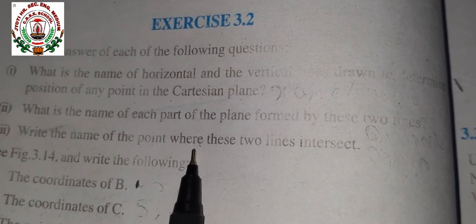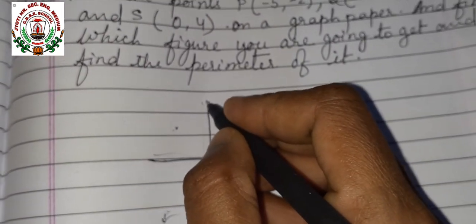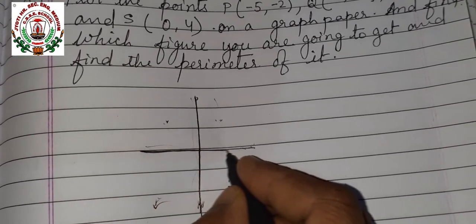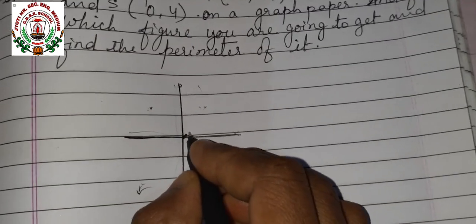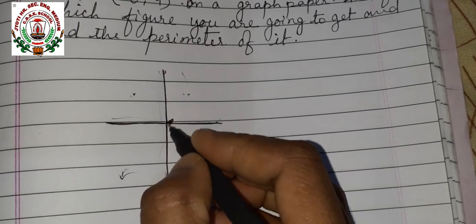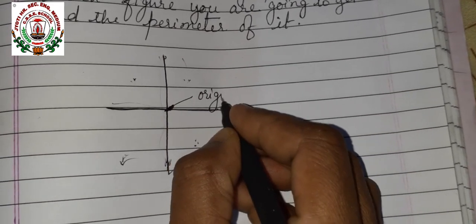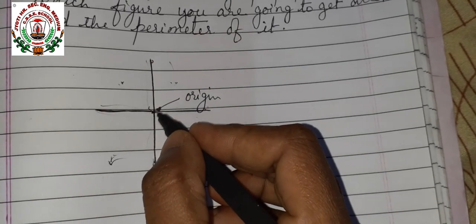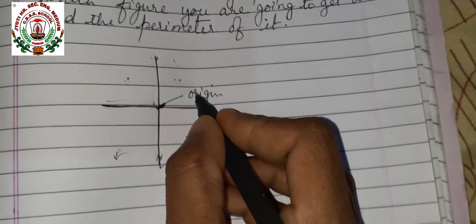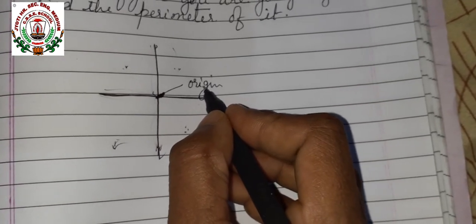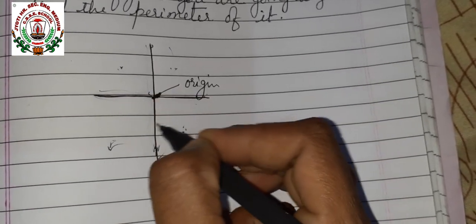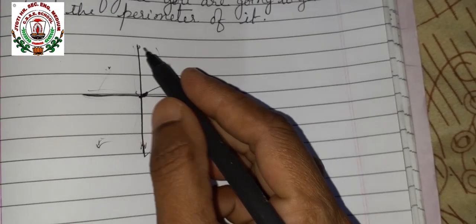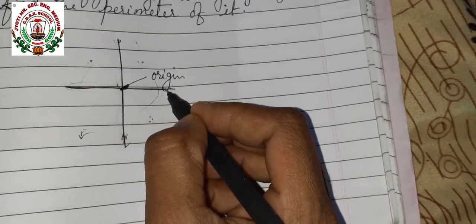Now the third question: write the name of the point where these two lines intersect. When x-axis and y-axis intersect, that point is called the origin. The intersection point is called origin. So the third answer is origin, the second answer is quadrant, and the first answer is y-axis and x-axis.